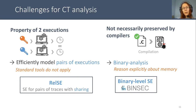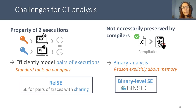Fortunately, for the first point, there is a recent adaptation of symbolic execution to pairs of traces called relational symbolic execution. It models two executions of a program and maximizes sharing between them. For the second point, we can use symbolic execution tools for binary code, with dedicated simplifications for binary analysis.